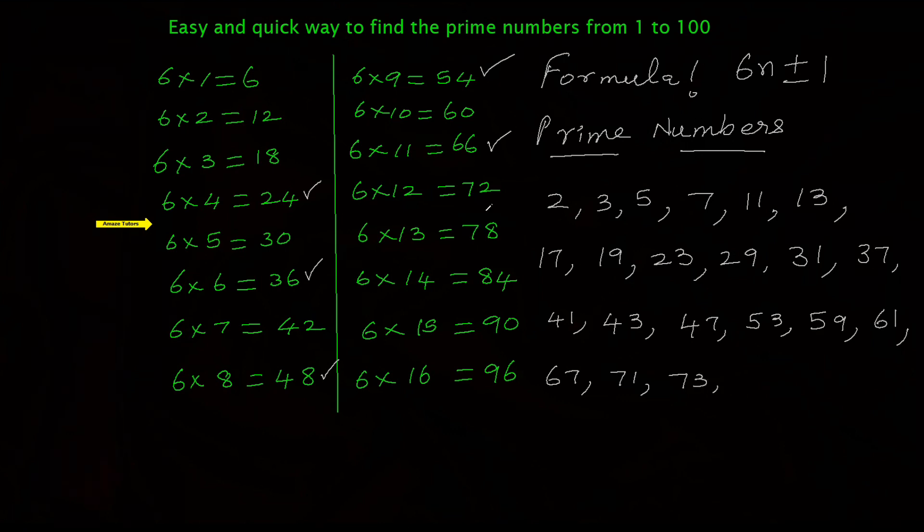Keep doing. 78 take away 1: 77. But we should not consider that—it is divisible even by 11 and 7. That's a composite number, don't consider that. 79 it is obviously a prime number. Next multiple of 6: 84. Take away 1: 83 which is a prime number. When you add 1: 85, don't consider that.